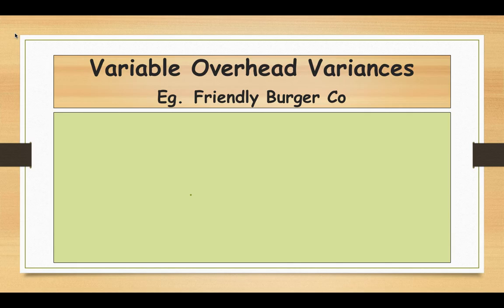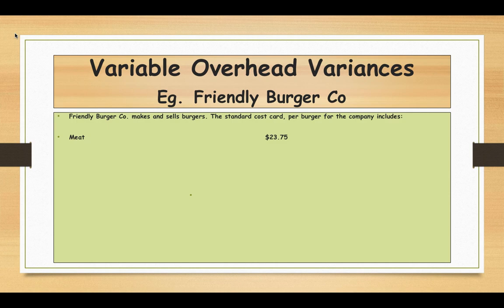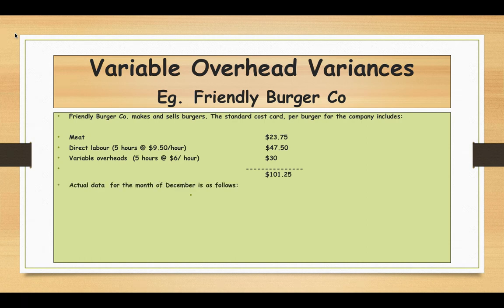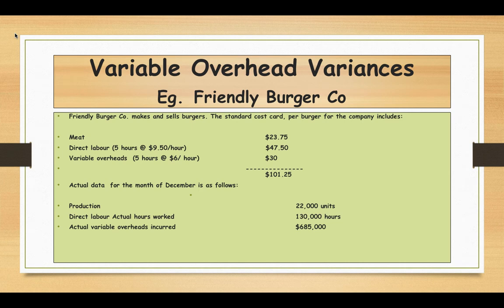We are going to see an example called the Friendly Burger Company. The company makes and sells burgers. The standard cost card per burger includes: meat $23.75; direct labor — each burger takes 5 hours at $9.50 per hour, which is $47.50; variable overhead — 5 hours at $6 per hour, which is $30. So the total variable cost is $101.25.